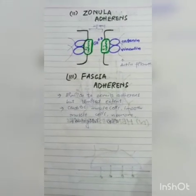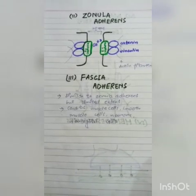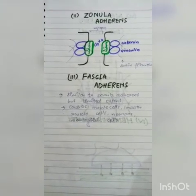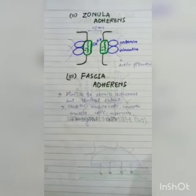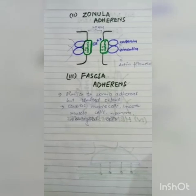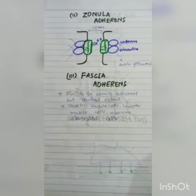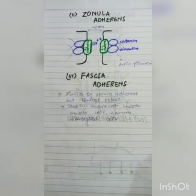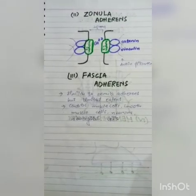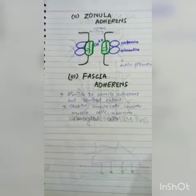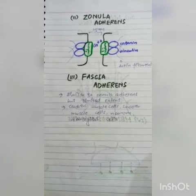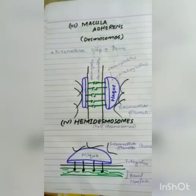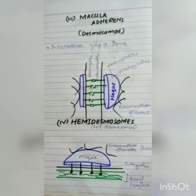Then there is fascia adherens. Fascia adherens is similar in structure to zonula adherens, but because it is of the fascia type, only a small band is involved and not the entire perimeter. Fascia adherens are found in cardiac muscle cells, smooth muscle cells, neurons, and neuroglial cells.